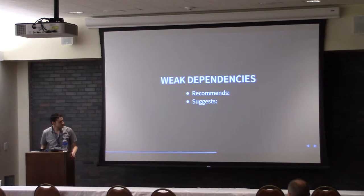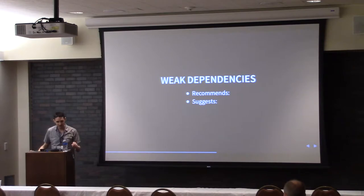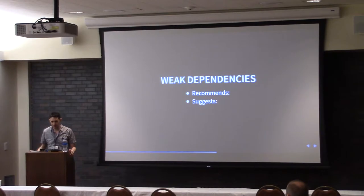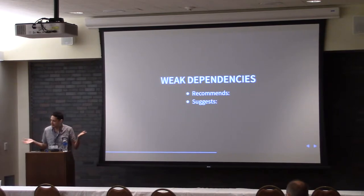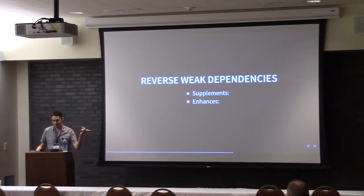Now we have weak dependencies where you can say this package kind of wants this other package to be there, but it's cool if it's not. Or this package wants this thing, and if it's there, great — and if you don't feel like installing it, that's fine too. The precise definitions are there, but the only tool we really had was either this thing requires this or it doesn't. And now it's like, now we can say 'kinda,' which doesn't really help with everything. And then we thought, what if we could do it backwards? So now you have supplements and enhances.